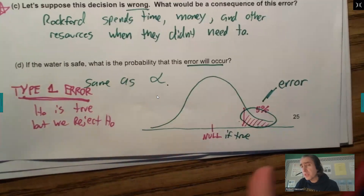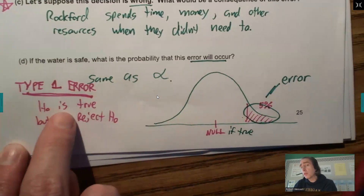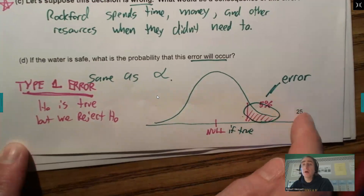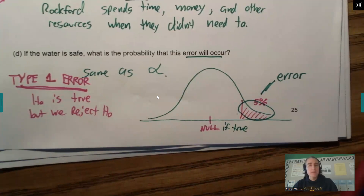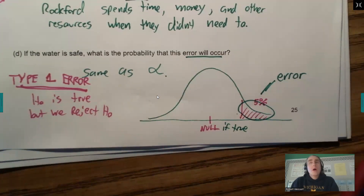The probability of a Type 1 error is the same as whatever your alpha is set to. If my alpha is set to 1%, the likelihood of making this error is only 1%, but I may not reject as much. There may be consequences of setting it too low. It's a little game we play — we decide what should I set my alpha to, and we have to decide what error is going to be more or less problematic. There are other types of errors as well.